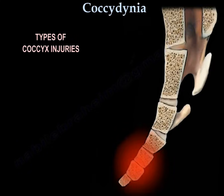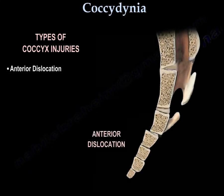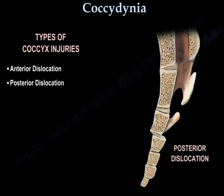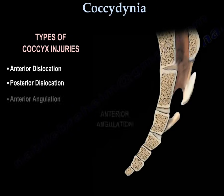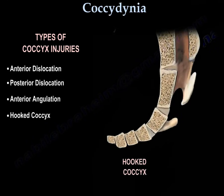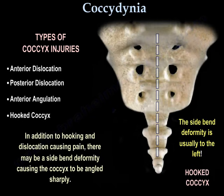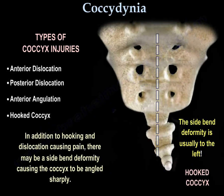Types of coccyx injuries include anterior dislocation, posterior dislocation, anterior angulation, and hooked coccyx. In addition to hooking and dislocation causing pain, there may be a side bend deformity causing the coccyx to be angled sharply. The side bend deformity is usually to the left, as seen in the hooked coccyx.